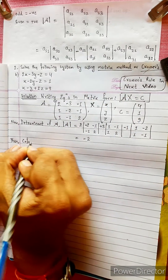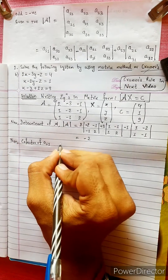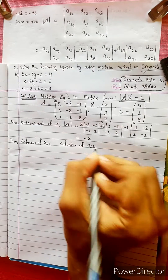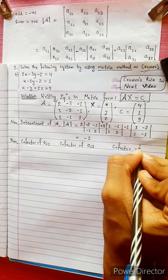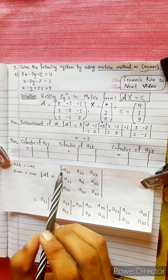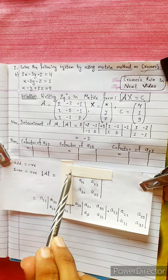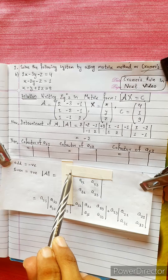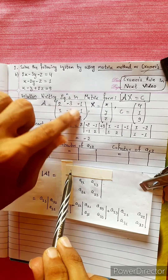This is the cofactor of A11, cofactor of A12, cofactor of A13. This is the cofactor of A11, A22, A23, A32, and A33. So we compare the matrix.